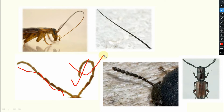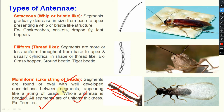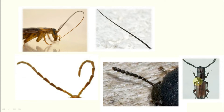Next one is moniliform — this is very, very important and comes in the exam. It looks like a string of beads, very ornamental. Segments are round or oval with well-developed constrictions between these segments, appearing like a string of beads. The whole antenna is beaded and all segments are uniform in thickness. This is present in case of termites — very, very important, generally comes in the exam. This is the moniliform type of antenna.